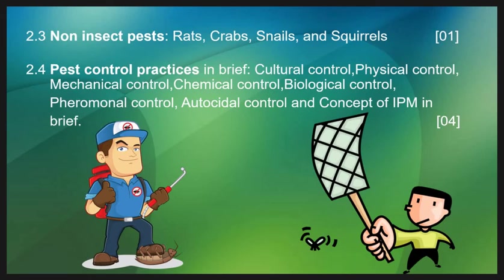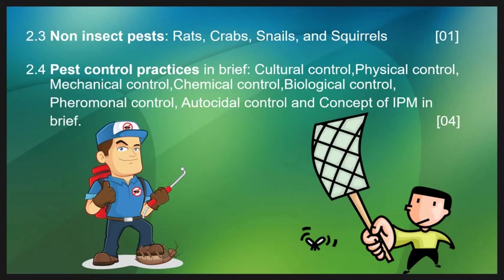Cultural control involves simple agricultural practices like tillage, site selection, crop rotation, etc. Chemical control involves the use of chemicals to kill the pest. In biological control, we use biological agents like plant extracts and predators to control the pest. We will also study some other important methods like pheromone control, autocidal control, and the concept of IPM in this unit.